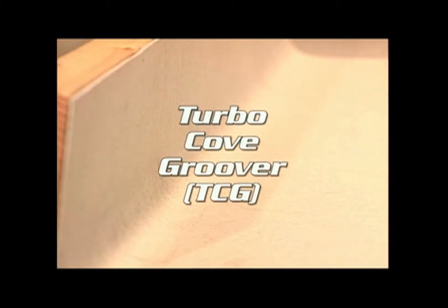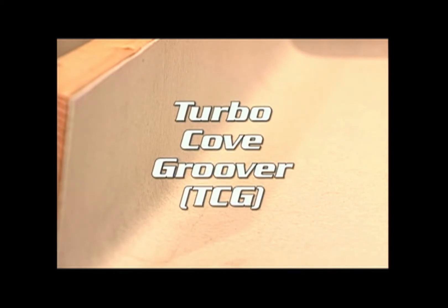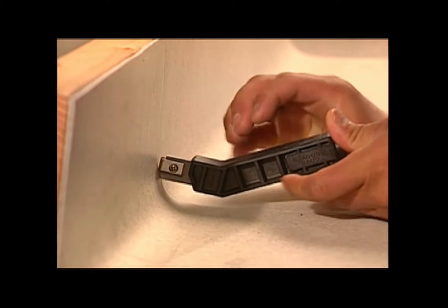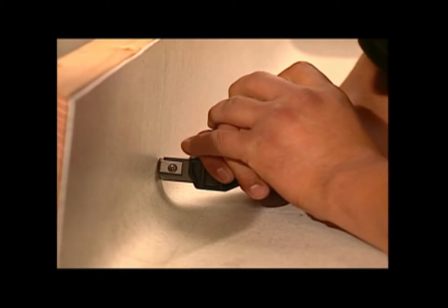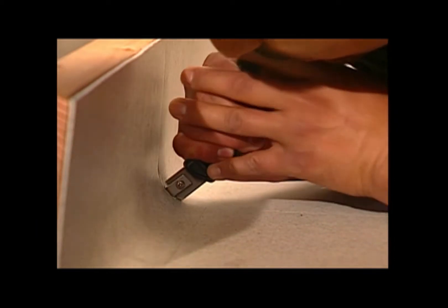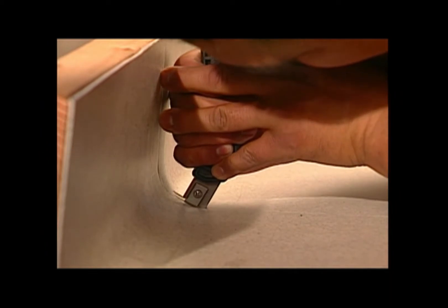The following actions are recommended for a perfectly grooved cove. Place the TCG with the landing face flush to the surface and the guide fin inside the seam. The TCG handle should be at a 90 degree angle to the surface. Press the TCG down and groove towards the floor.